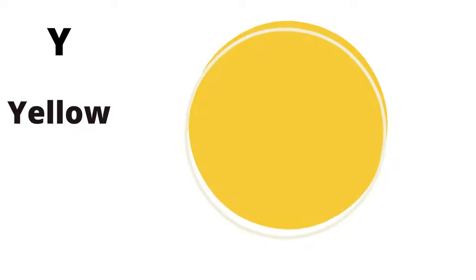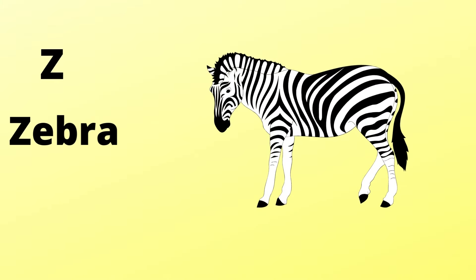Y is for yellow, y-y-yellow. Z is for zebra, z-z-zebra.